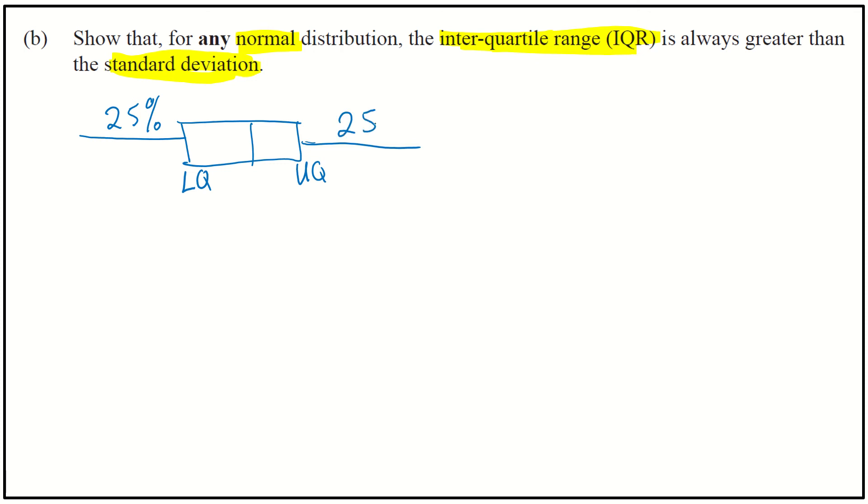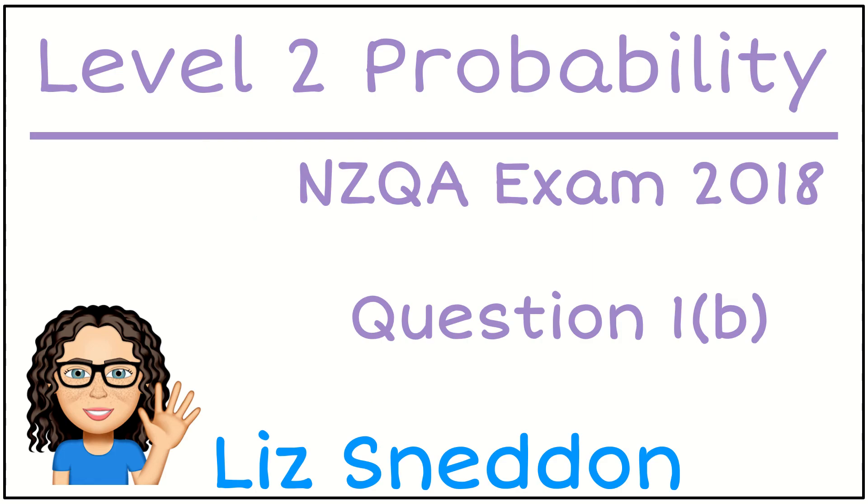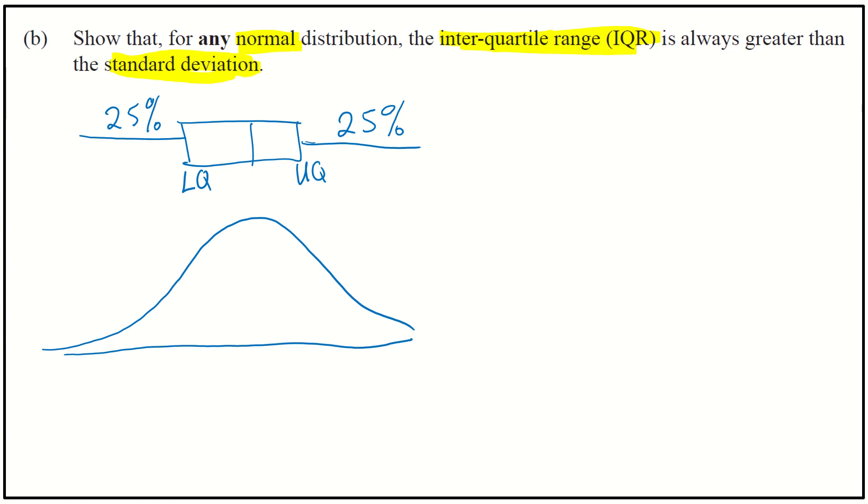The upper quartile means there's 25% above it. So if I now translate that into a normal distribution, come back there, put our mean in the middle, our lower quartile is a point here where there is 25% of the data below it. And our upper quartile is a point here where there is 25% of the data above that point.